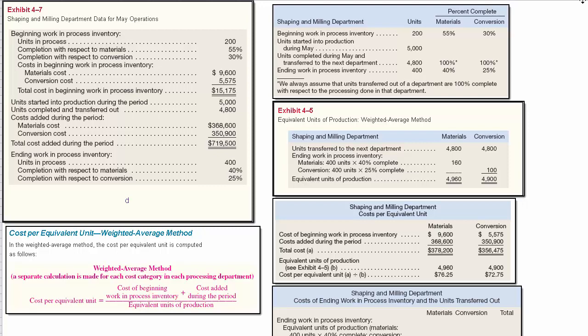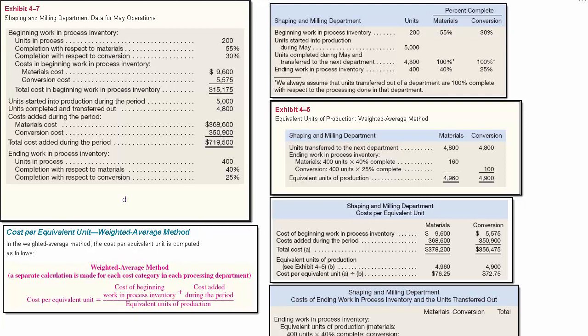Hi everyone. What I'm going to do in this presentation is walk you through a weighted average process costing problem. In other words, we're doing process costing and we're using the weighted average method. There's some information that's provided in this problem given in exhibits. We're talking about the shaping and milling department for May — this is Exhibit 4-7.